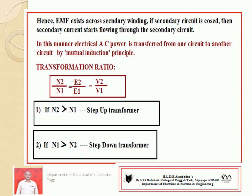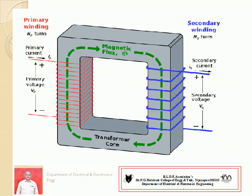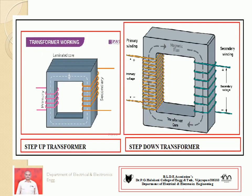Now we can observe very clearly how the laminated core is used. This is a type of steel structure called a laminated core. Instead of one solid core material, thin laminated structures are arranged to form the core, because it reduces the heating effect — that is, it reduces eddy current losses.